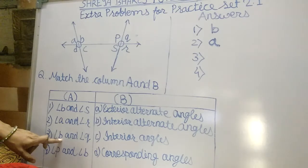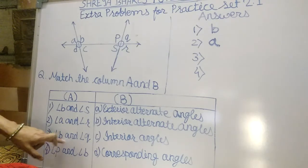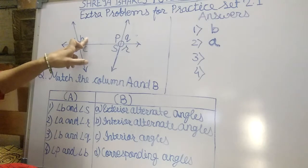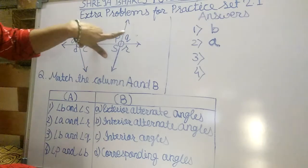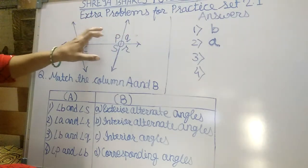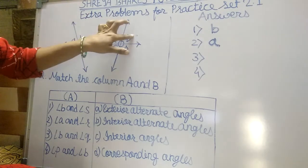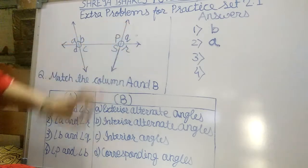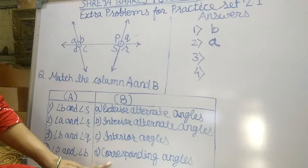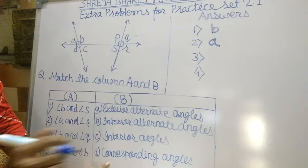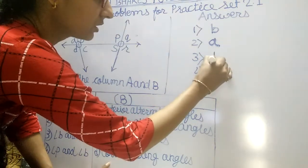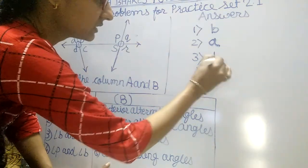Third: angle B and angle Q. B and Q are the corresponding angles. So the third answer is D.